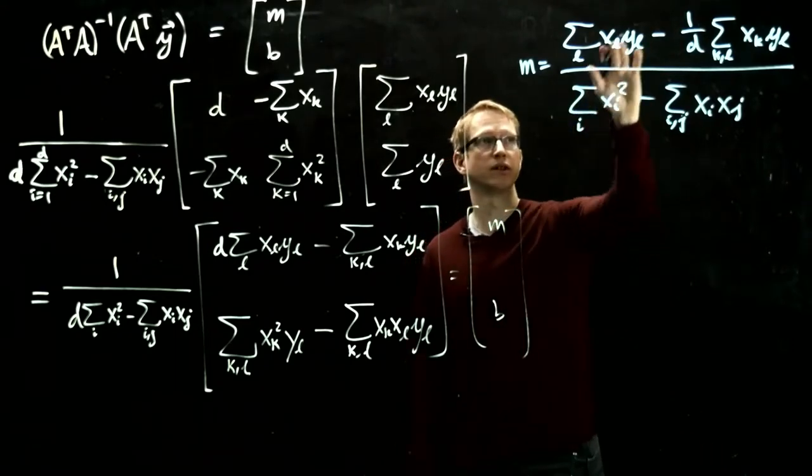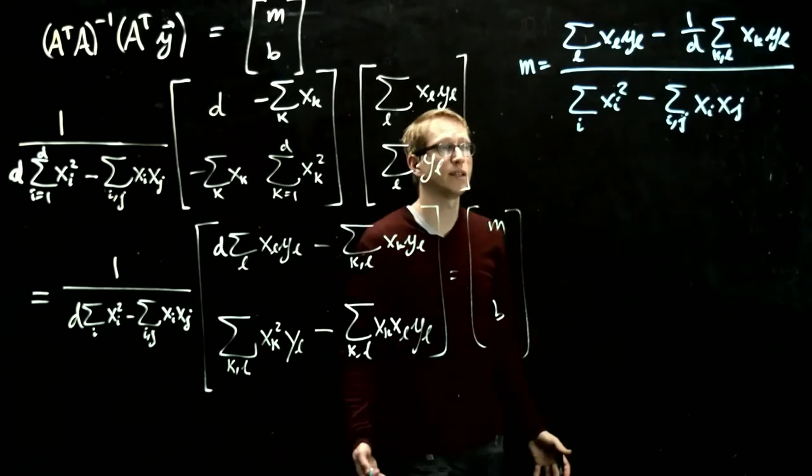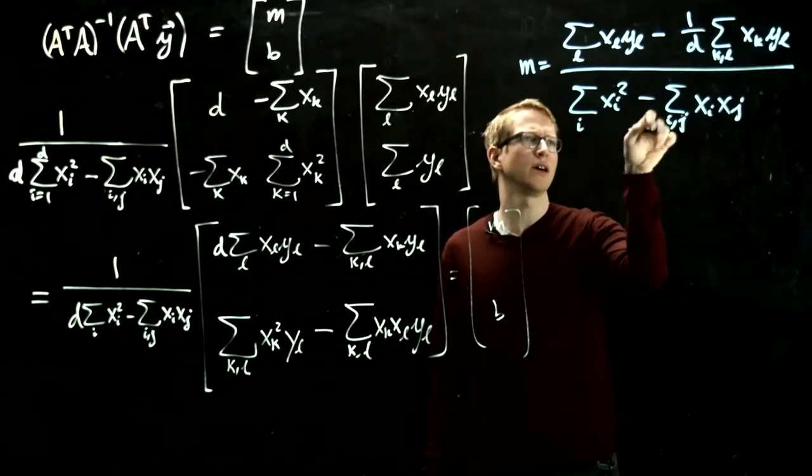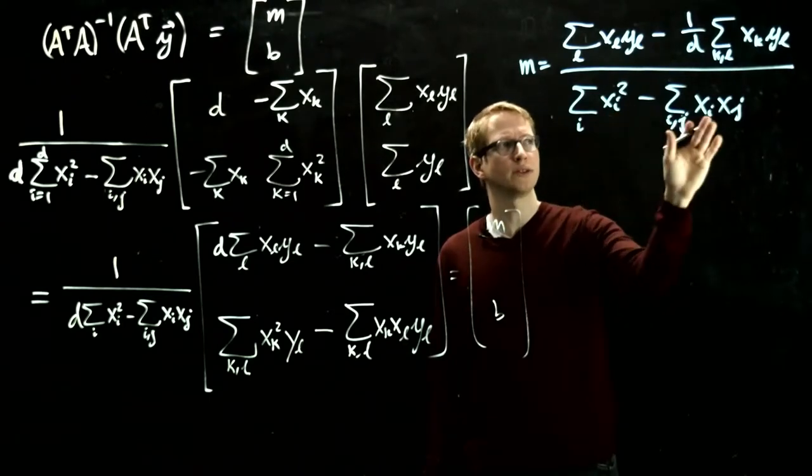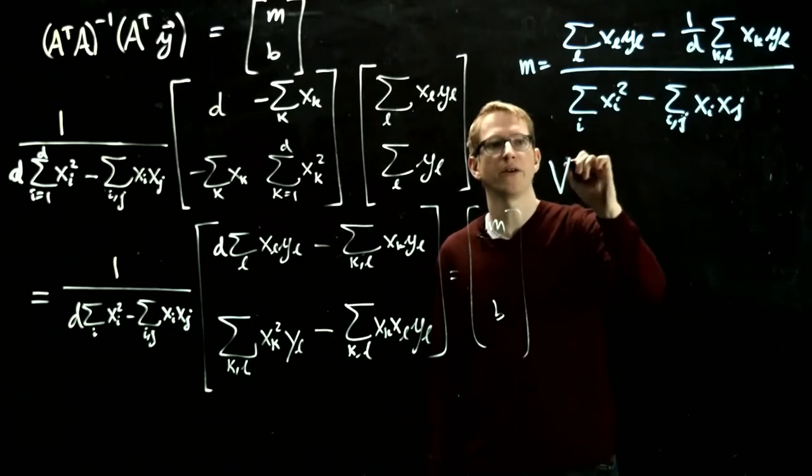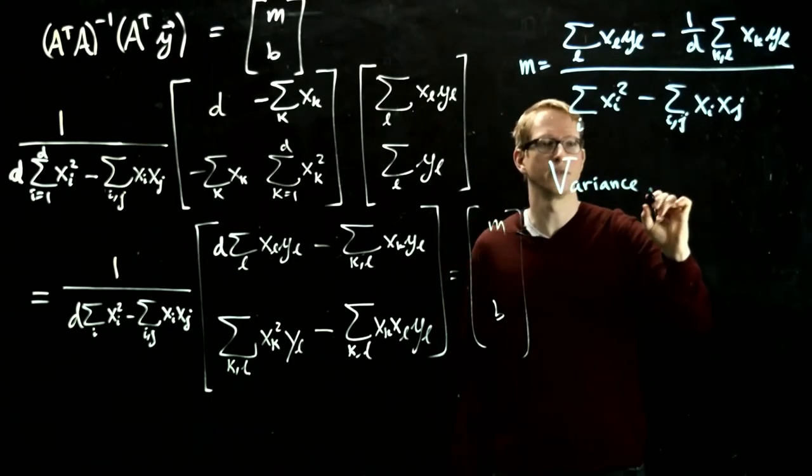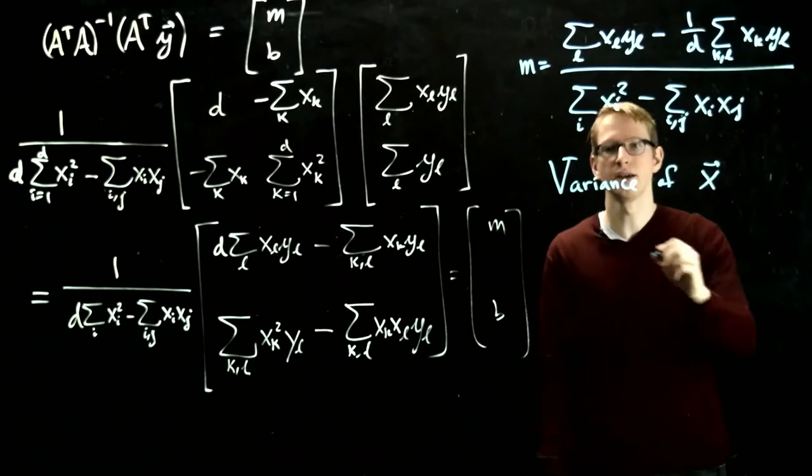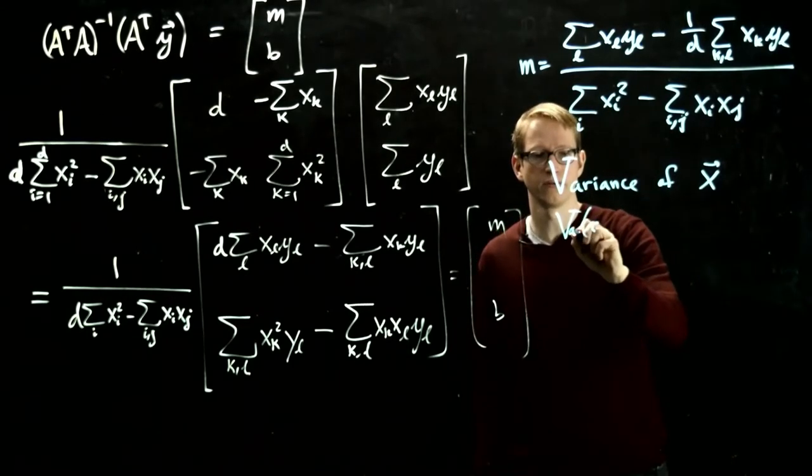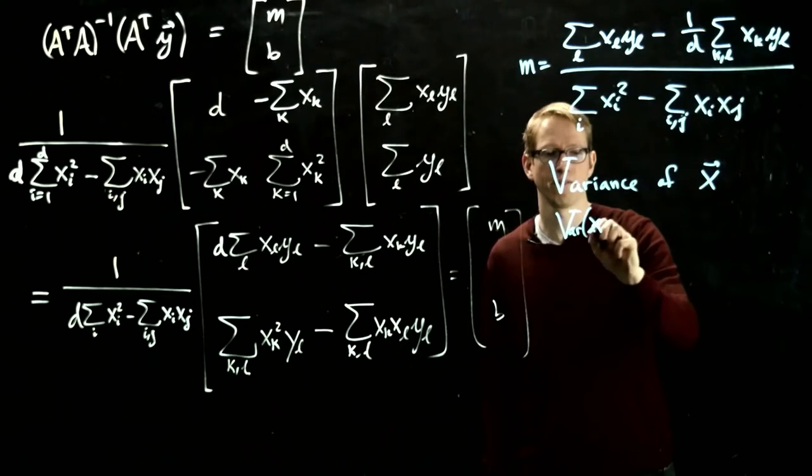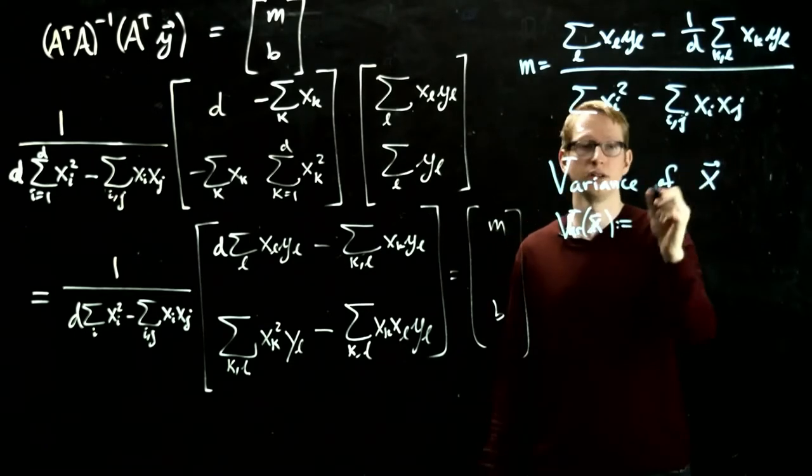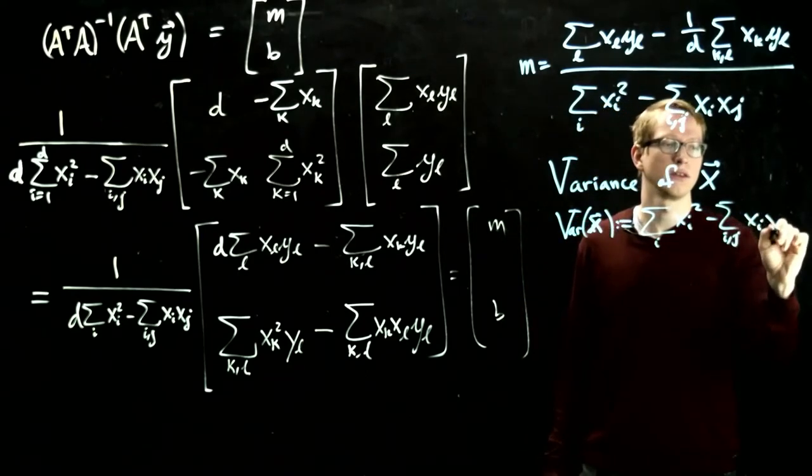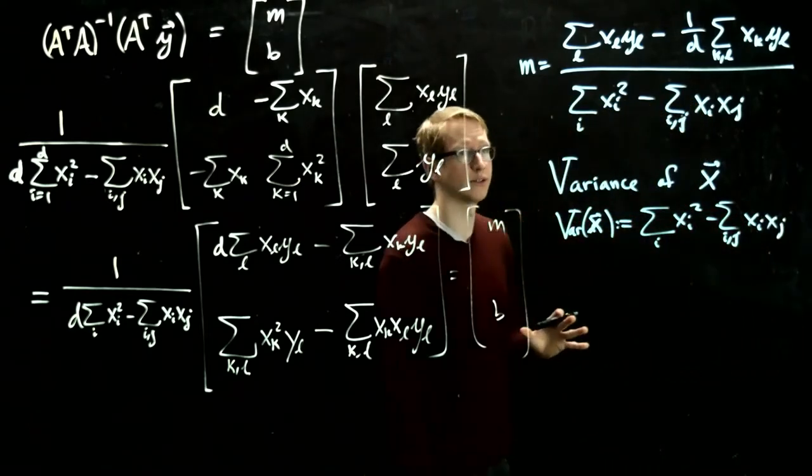Now, each of these expressions actually show up in statistics quite often, and they're actually given special names. We call the, let's do the denominator first, since this one only involves a single data set, this is called the variance of the data set x, where x vector equals x1 through xd, and it's also written as var of x. And this just equals by definition, the sum of the xi squared minus xi xj xi xj. So that's what the variance is, by definition.